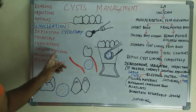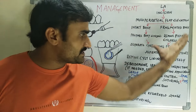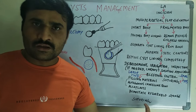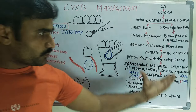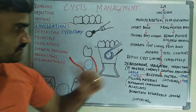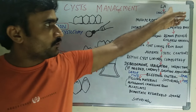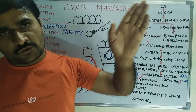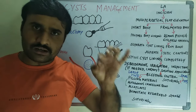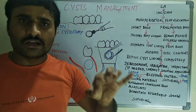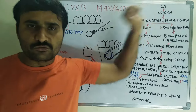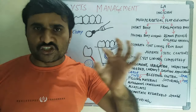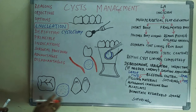The surgical procedure is best written as a step-by-step flowchart in exams. First, the procedure is carried out under local anesthesia (LA) or general anesthesia. If general anesthesia is used, some amount of local anesthetic infiltration should also be administered. After that, we take the mucosal incision.